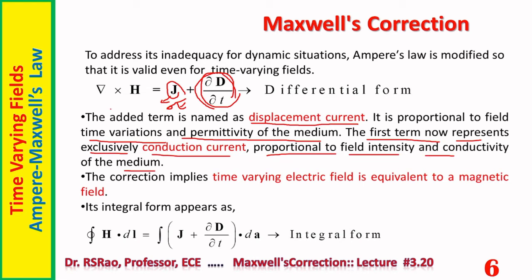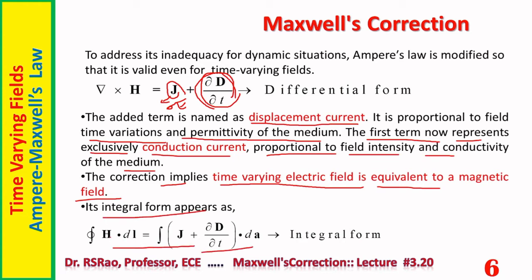Conduction current is proportional to field intensity and conductivity of the medium — it always equals σE, which is Ohm's law in point form. This is the differential form of the corrected equation. It can also be converted into integral form. The correction term implies that a time-varying electric field is equivalent to a magnetic field — an important consequence. Faraday's Law says a time-varying magnetic field is equivalent to an electric field, whereas this law says a time-varying electric field is equivalent to a magnetic field.